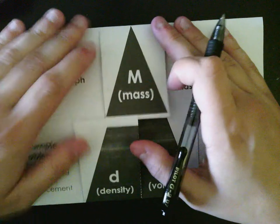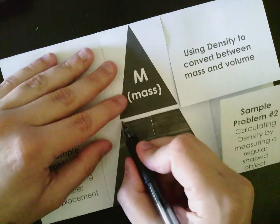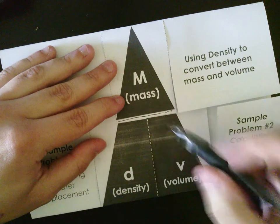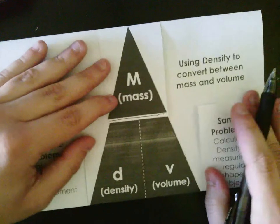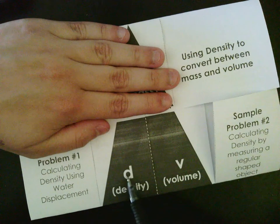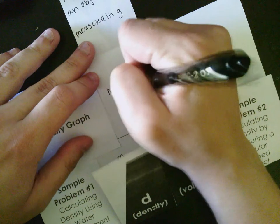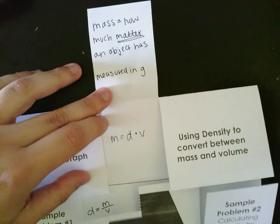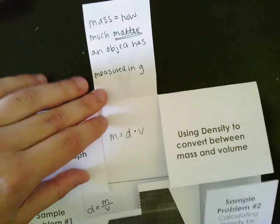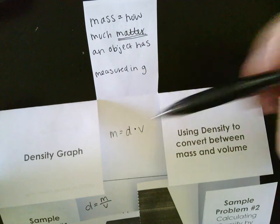If I want to calculate mass, I'm going to use a math triangle. In a math triangle, anytime I have a horizontal line, I divide; anytime I have a vertical line, I multiply. So if I'm looking for mass, I put my hand over mass and I see that I need to do density times volume. So my equation for mass is: mass equals density times volume. We measure mass in grams, and the equation we use to find mass is density times volume.